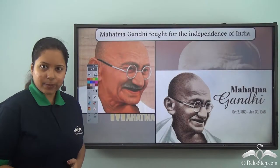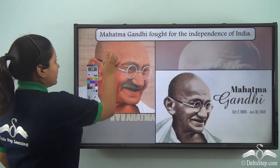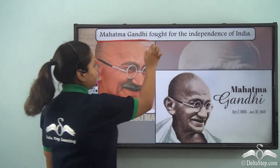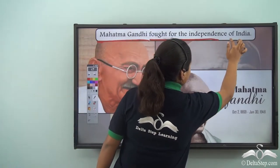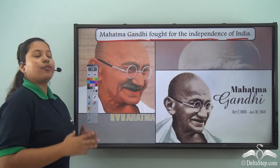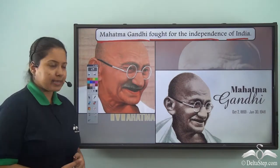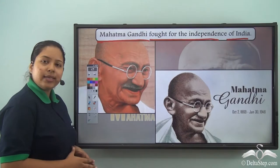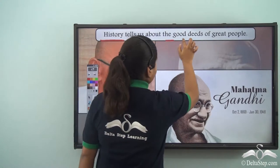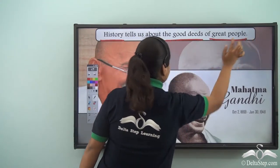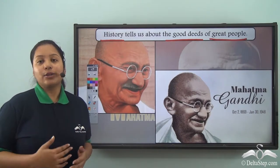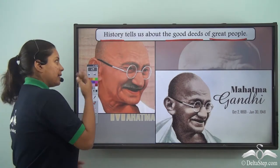Do you recognize this person? His name is Mahatma Gandhi. Why do we know him? Because he fought for the independence of India — he was a freedom fighter. He always followed the path of non-violence. How do we know this? With the help of history. So history tells us about the good deeds of great people. His good deeds are known to us with the help of history.